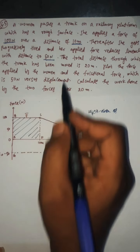We have to take the frictional force in the negative direction. The question asks us to calculate the work done by the two forces over 20 meters — work done by the woman and work done by the frictional force. Simply, the area under the force versus displacement graph gives us the work done.